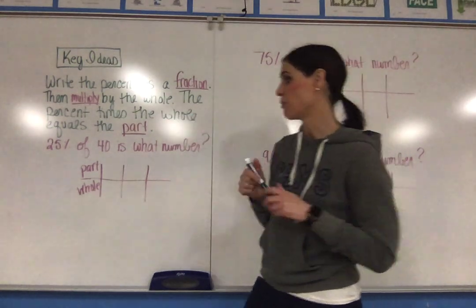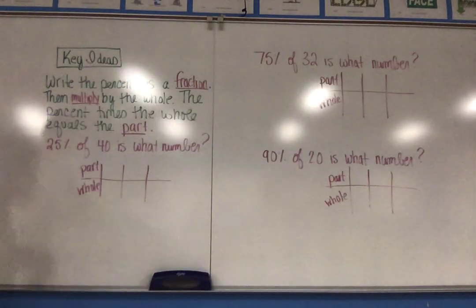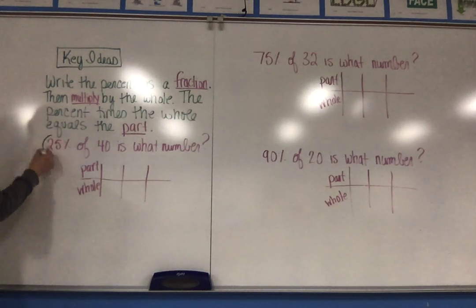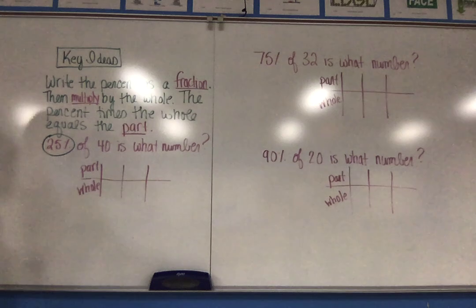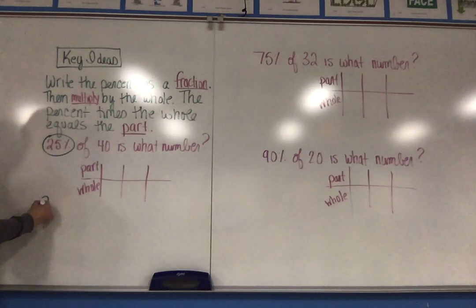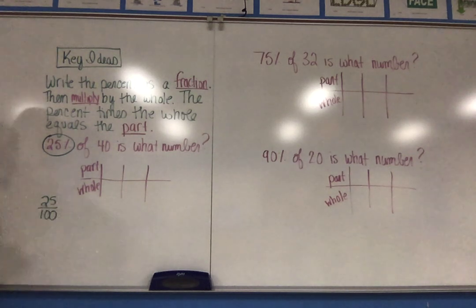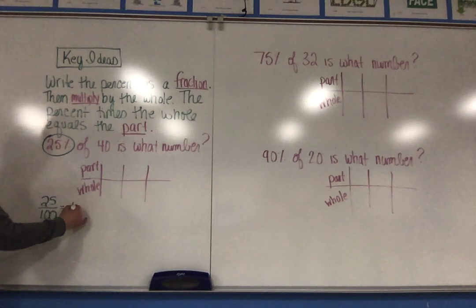So let's start with the multiplication first. I'm going to take the percent, which is 25%, and I am first going to write that as a fraction. 25% as a fraction is 25 over 100, because percents are always out of a hundred. I'm going to simplify that fraction, which is one-fourth.